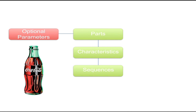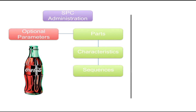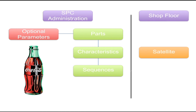A sequence is a group of characteristics from one part file in a predefined order. If the SPC administrator sets up the data model according to this structure, we need a user-friendly way to present the sequences to operators. On the shop floor, we install a satellite module on each PC where data will be entered. Operators can enter data from different process steps or machines in one satellite, so we create different screens for each process step — these are called pages. The SPC administrator can then simply send the required sequences to the pages.